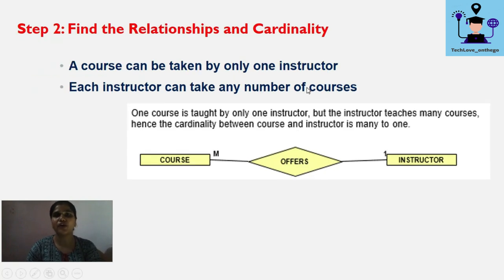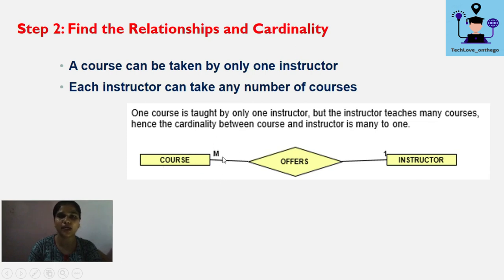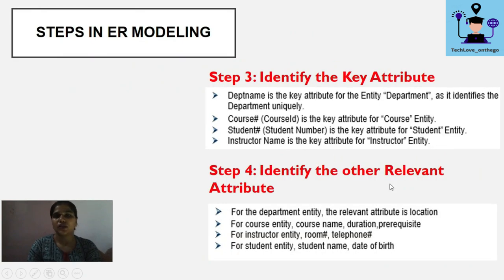A course can be taken by only one instructor, and each instructor can take any number of courses. The relationship is between Course and Instructor. One instance of a course can only be offered by one instructor, but one instructor can offer many courses. So from the course side, the relationship is many-to-one.